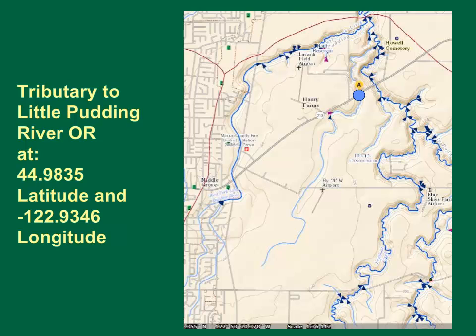We can see that most of the basin for this tributary is somewhat flat with only one topographic contour between the stream and surrounding tributaries to the Little Pudding River. The watercourse gets steep as it approaches Route 213, but much of the basin would be difficult to delineate with this map.